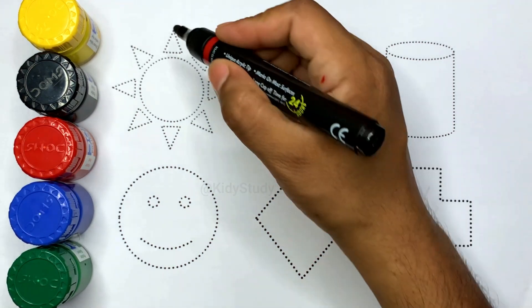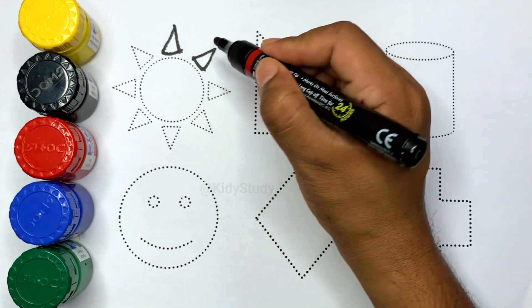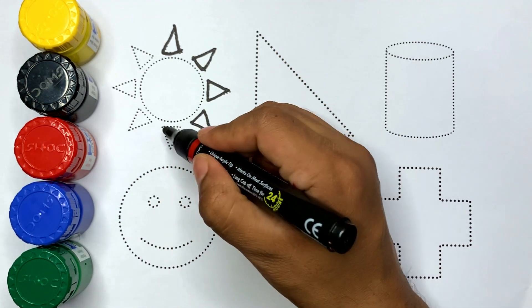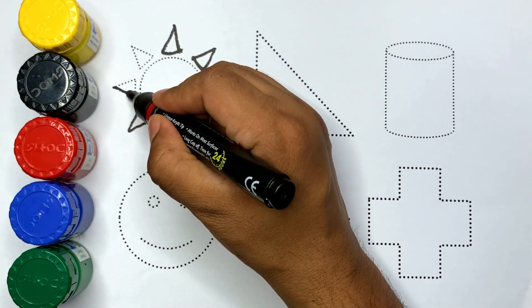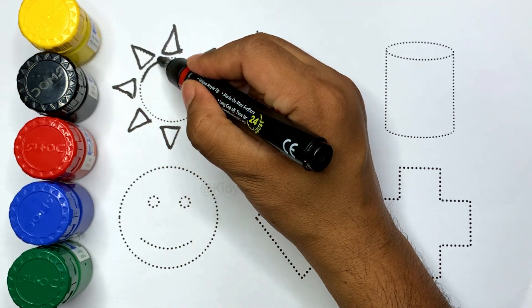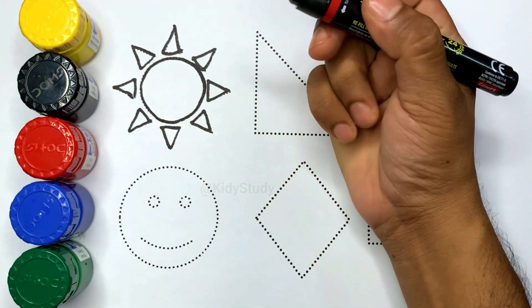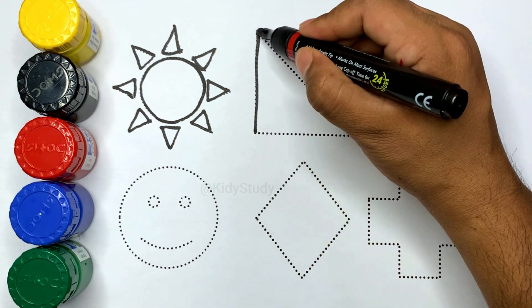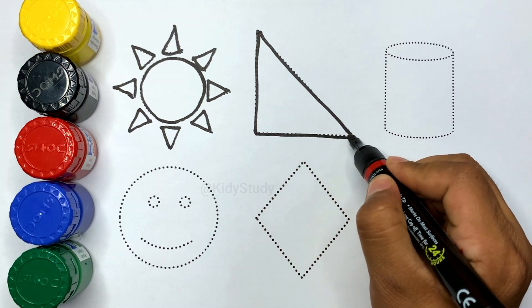Black color. Here is sun. Here is right angle triangle.